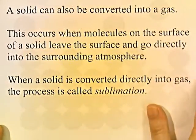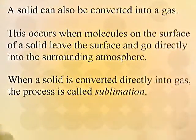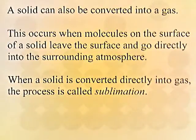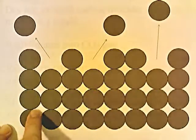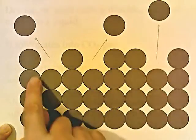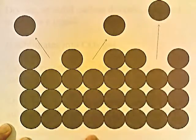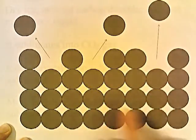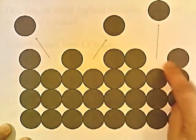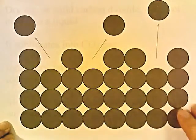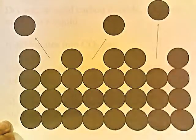A solid can also be converted directly into a gas. This occurs when molecules on the surface of a solid leave the surface and go directly into the surrounding atmosphere. When a solid is converted directly into a gas, the process is called sublimation. Here we have a solid where all molecules are in an orderly crystal lattice, and if you add heat, the particles on the surface go directly into the air — that's sublimation.